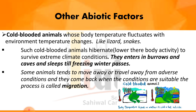Some animals tend to move away from adverse conditions. Some animals and individuals have the ability to migrate from an area because of temperature fluctuations. They migrate from one area to another, and when conditions return to normal, they return back to the same area when conditions are suitable. This process is known as migration.